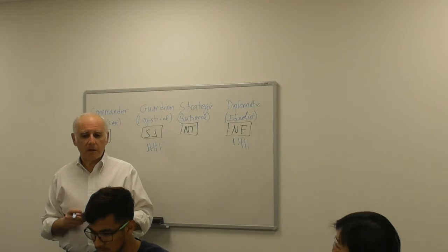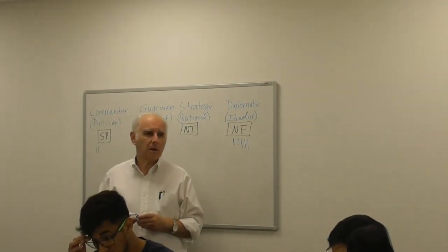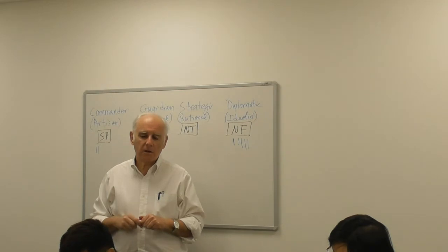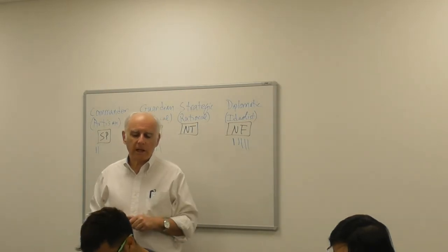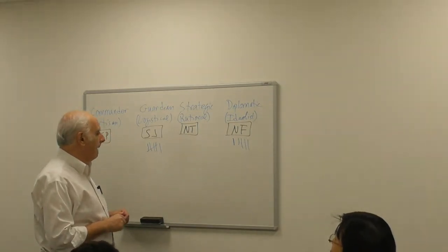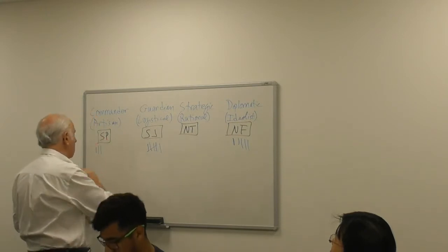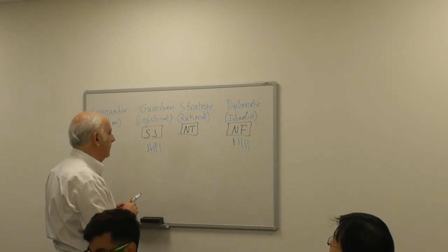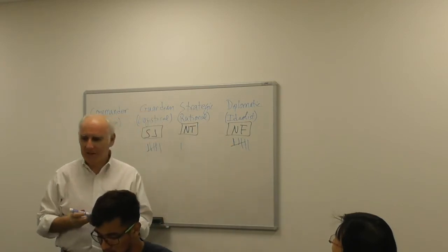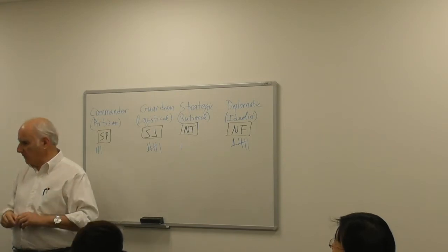A student responds that they were in between for two of them. The instructor asks them to give both: SP, NT, and NF. So you're sort of in the middle. Okay, good. Let's talk about this a little bit.